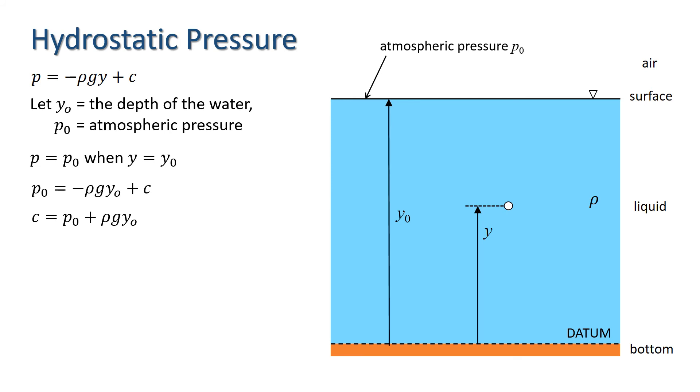Putting C back into the equation for P, we get P equals P nought plus rho G y nought minus y.